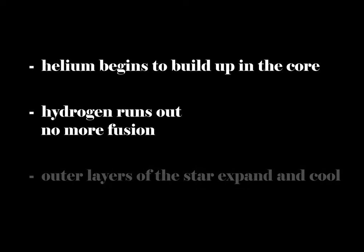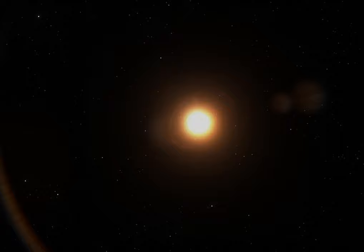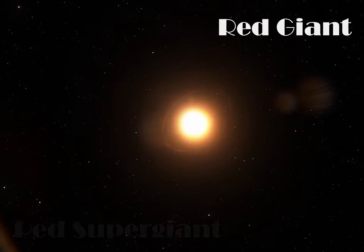Depending on the star's life, helium begins to build up in its core. Helium is still fuel, but there isn't enough pressure or heat to use it. Once the core runs out of all hydrogen and no more fusion can occur, it contracts, while the outer layers of the star expand and cool. As the core contracts, this increased heat and pressure allows helium to begin fusion. This is the next stage of the star's evolution: a red giant or supergiant.